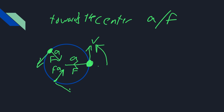Another problem you might see: as the mass is going in the circle, they say we're going to cut the string right here. What happens to the mass? Well, if you notice the velocity is going straight up at that point, so the mass is just going to continue in a straight line. Or if we cut it over here, it's going to continue in a straight line that way.